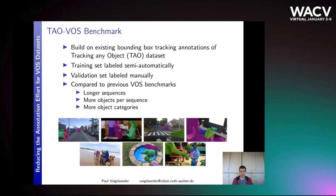The TAO-VOS benchmark was created by building on existing bounding box tracking annotations of the Tracking Any Object, or TAO, dataset. We labeled the training set with masks using the semi-automatic method presented before, and annotated the validation set fully by hand to enable meaningful evaluation. Compared to previous VOS benchmarks, the new benchmark offers significantly longer sequences, more objects per sequence, and more object categories.